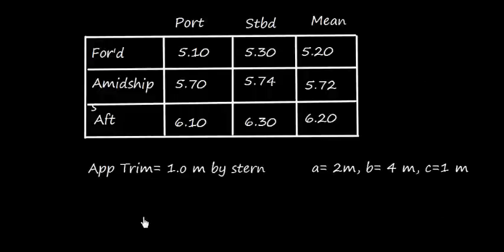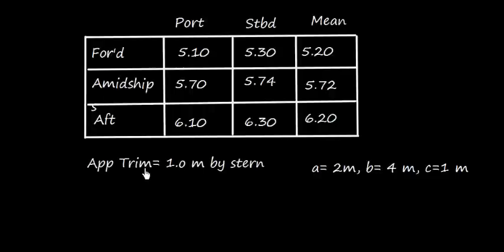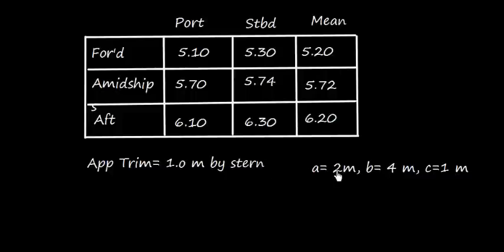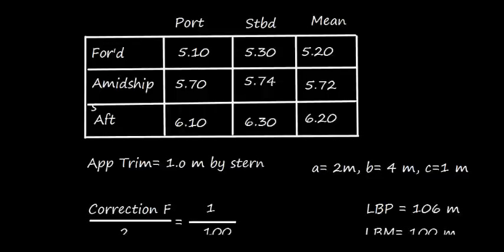Now let's find the apparent trim. Apparent trim is the difference between forward draft and aft draft. Forward draft is 5.20 m and aft is 6.20 m, so apparent trim is 1 meter by the stern. Taking values: a = 2 m, b = 4 m, c = 1 m. Now let's find the corrections.